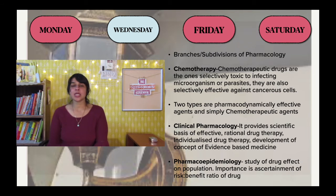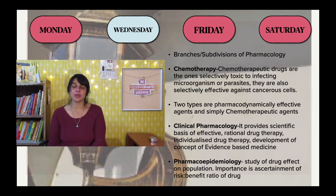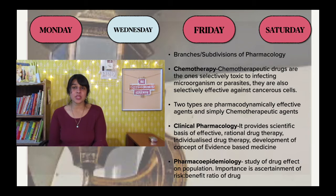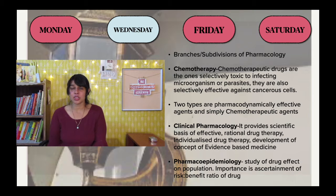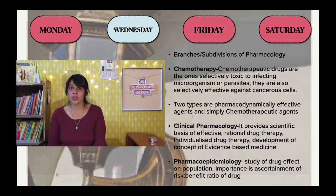I ended the episode with discussions about pharmacoepidemiology, which is very important because it involves studying drug effects on whole populations. An individual alone does not tell us the risk-benefit ratio. Studying the drug on a population lets you ascertain the risk-benefit ratio, which is important for determining how the drug will affect the majority of people.